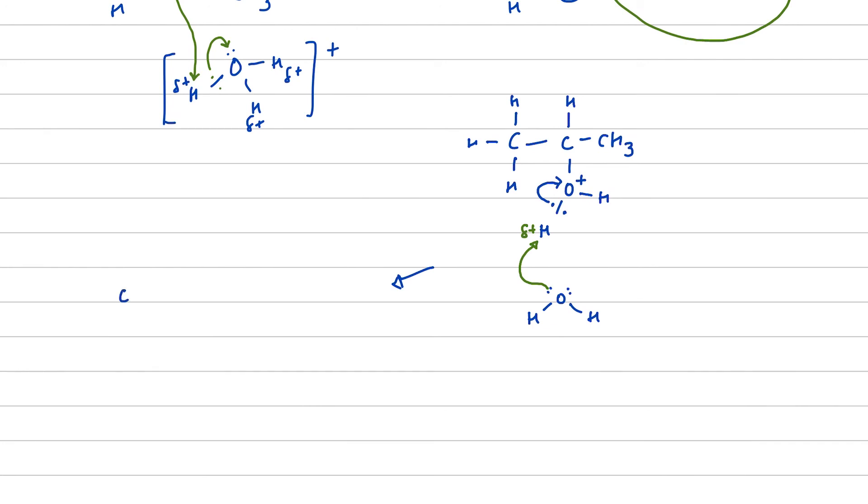So we now end up with our products. So we have got propan-2-ol, the OH group, and the methyl group. And let's put our hydrogen on there, plus. What else have we got? We have got an oxonium ion, H3O+.